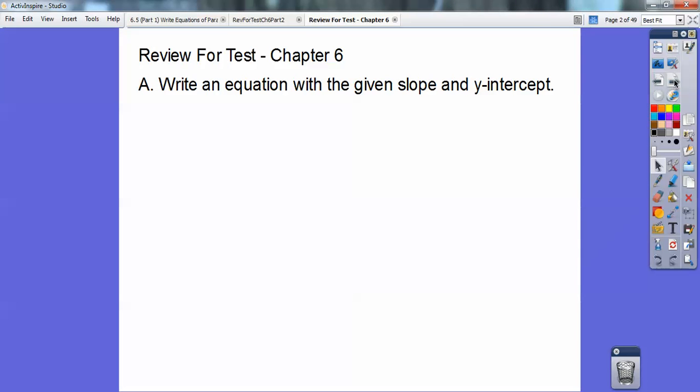So write an equation of the line with the given slope and the y-intercept. Slope 3, y-intercept 6, it's y equals mx plus b, so there's the answer right there, y equals 3x plus 6. Same thing: y equals 7x minus 8, so 7x minus 8.